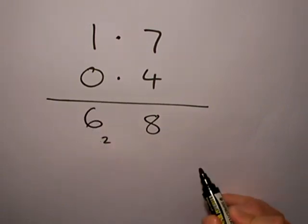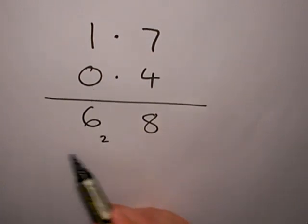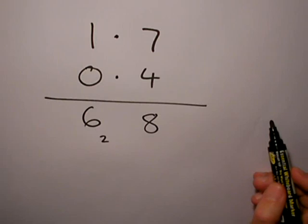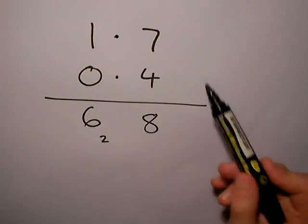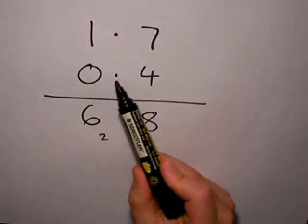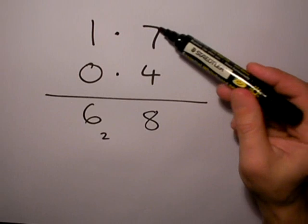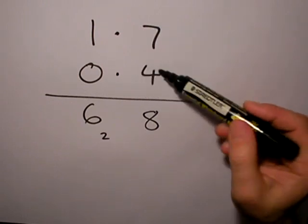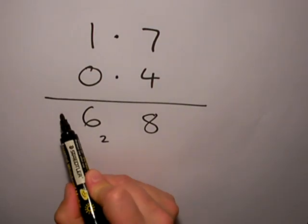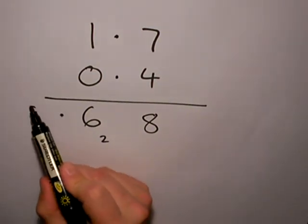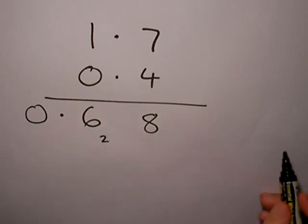I'm not going to multiply by the 0 because that will give me just 0 anyway, so I can just worry about the 68 as my answer. But, because it's 1.7 and 0.4, I've got two numbers after the decimal point. A digit there after the decimal point, a digit there after the decimal point. So, I need two digits after the decimal point in the answer. So, if I stick a 0 there, it makes more sense. 0.68 is the answer.